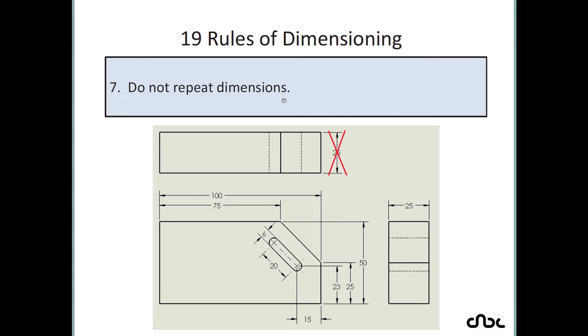Rule number 7: do not repeat dimensions. If a dimension of 25 is already placed in one view, you should not repeat that same dimension in any other view. Once a dimension is placed, it should appear only once across all views.